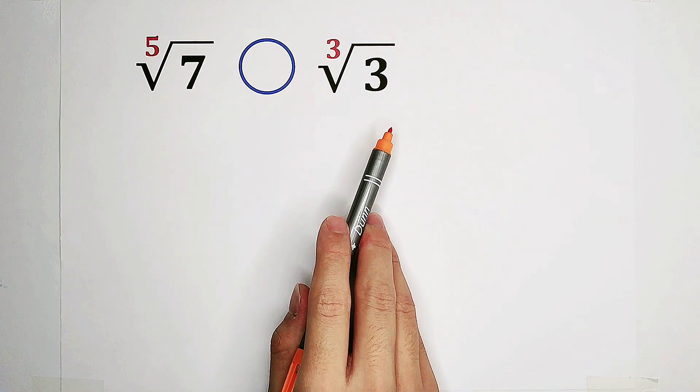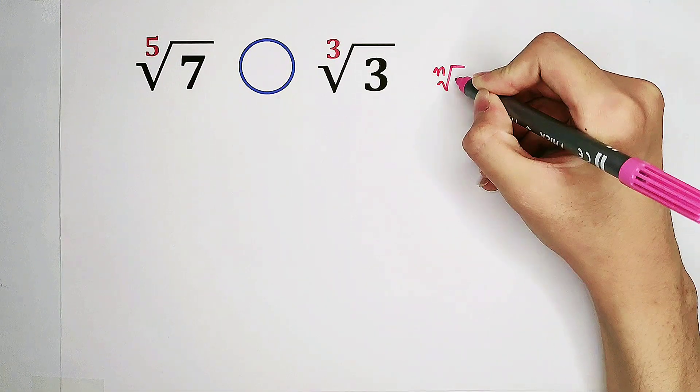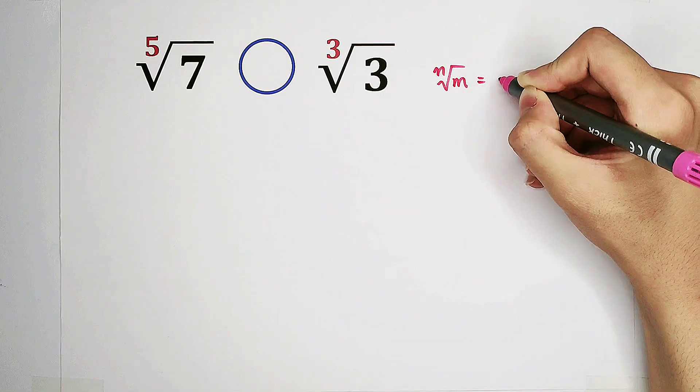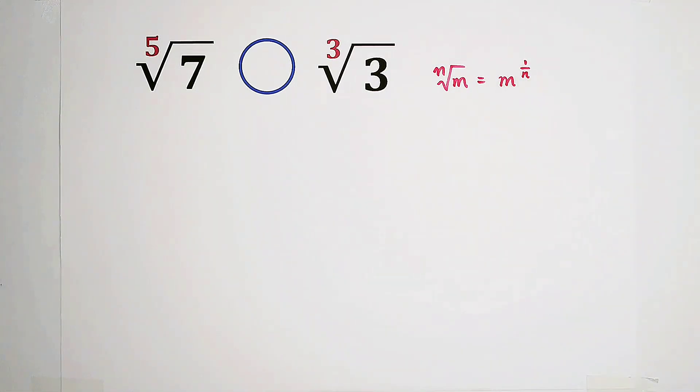Now a trick is coming. We know that the nth root of a number, for example m, can be written as m to the power of 1 over n. So the nth root of m is just equal to m to the power of reciprocal of n.